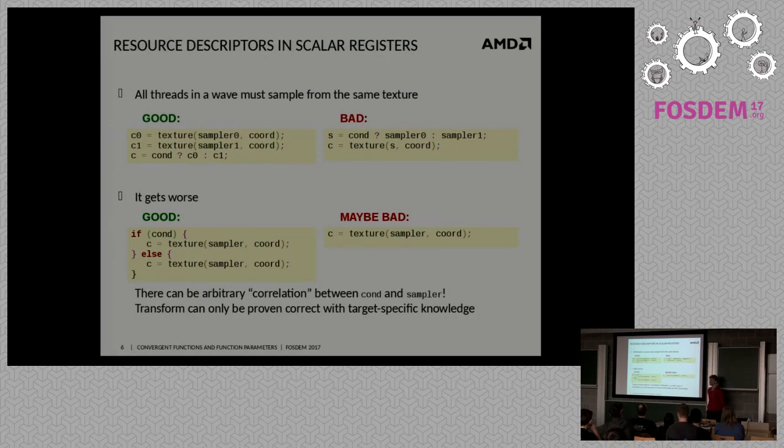So again, the transform from left to right is one that we must forbid, and actually one that LLVM does today, at least with tail syncing in Simplify CFG. It gets worse if you look at the bottom example from left to right, which looks like it should be trivially equivalent, but it's not, because maybe if condition is true, then sampler is sampler zero, and if condition is false, then sampler is sampler one, and then the code fragment on the left works with the hardware, but the one on the right has the same problem, where suddenly the sampler is not the same across all threads of a wave, and you get some kind of undefined results.